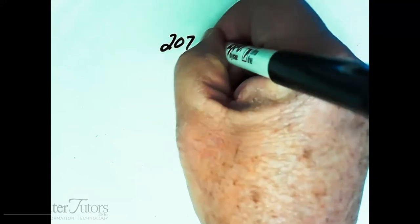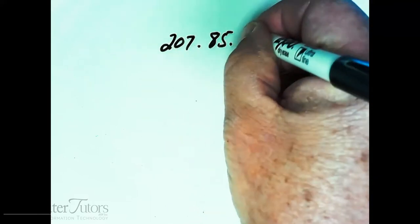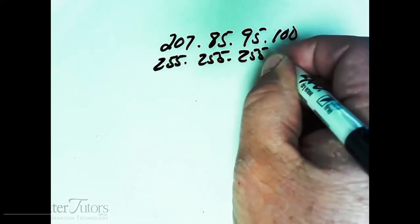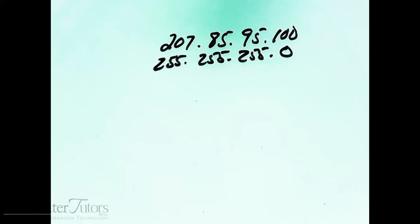Let's do another one. Same questions about network address and host address. With a subnet mask of 255.255.255.0, we know that the network address is 207.85.95 and the host number is 100.